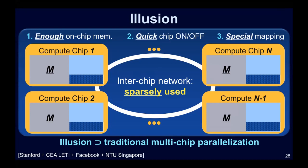As a result, you get this notion of illusion: not only can you perform the task and produce correct results, but your overall energy of the illusion system — including everything — will be within 5% of the dream chip that you cannot build, and your overall execution time or throughput will be within 5% of the dream chip. This kind of illusion is not possible with traditional multi-chip parallelization, even though the notion of using multiple chips has been known since the 1960s.